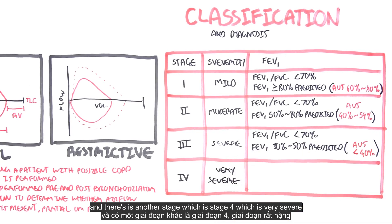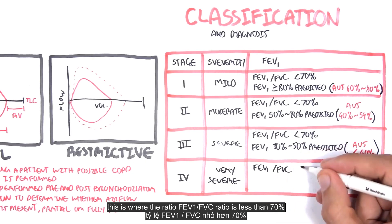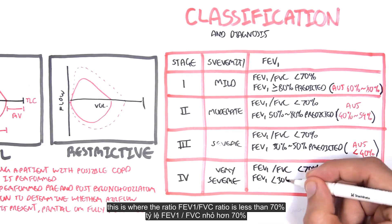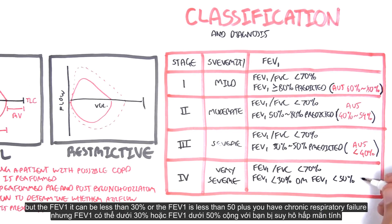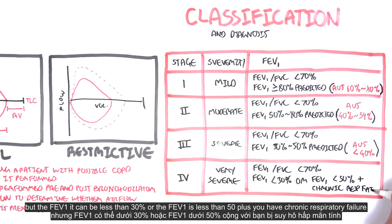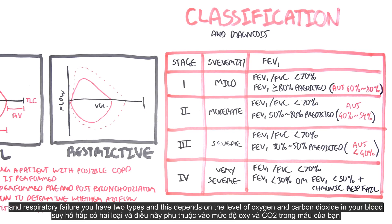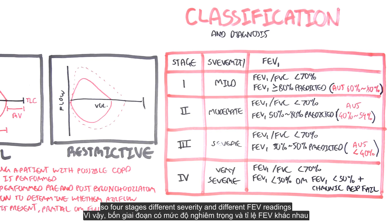Stage four is very severe. The FEV1 to FVC ratio is less than 70 percent, but the FEV1 is less than 30 percent, or the FEV1 is less than 50 percent plus you have chronic respiratory failure. Chronic respiratory failure has two types depending on the level of oxygen and carbon dioxide in your blood. So four stages, different severities and different FEV readings.